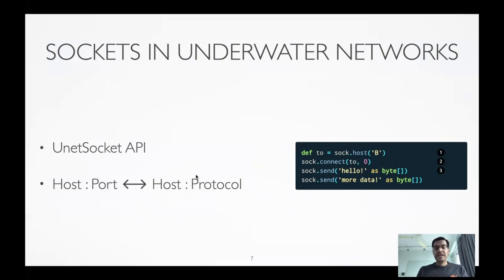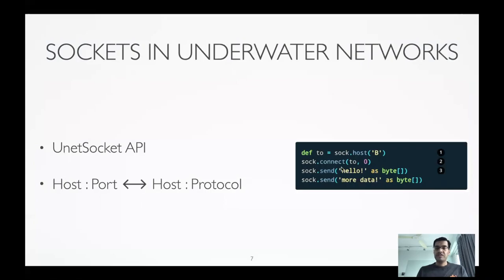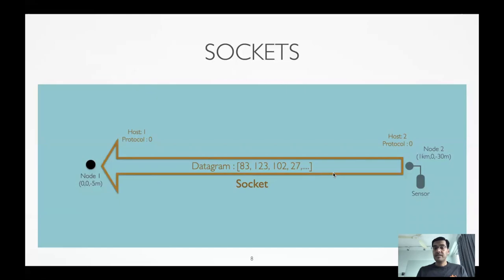It's a much smaller number of concurrent applications, but the basic concept is the same. Looking at the code snippet, the API is very similar to a standard socket API — you take a socket, connect it to a remote host with a specific protocol number (here protocol 0), then just send a byte array and it gets received on the other side. Underneath, the string you send is converted into bytes, which go through UnetStack as a datagram and into the water based on the physical layer configuration.